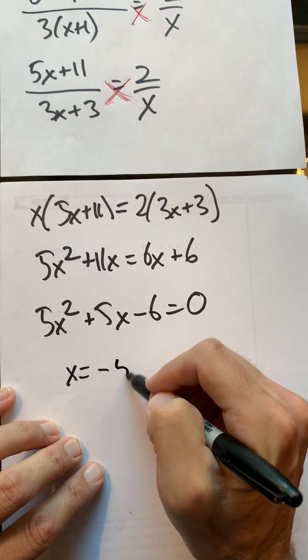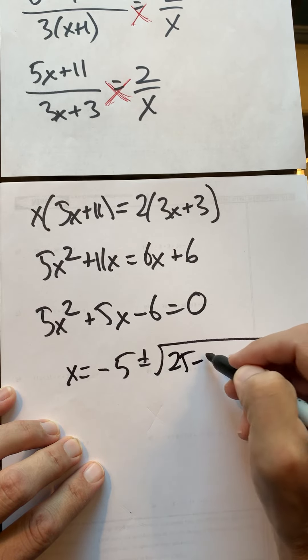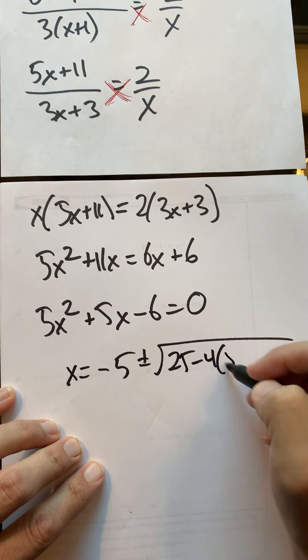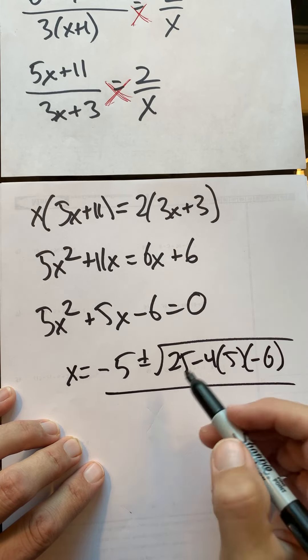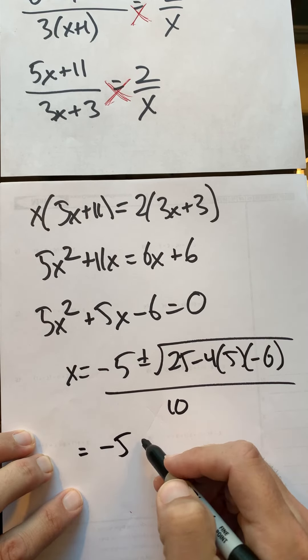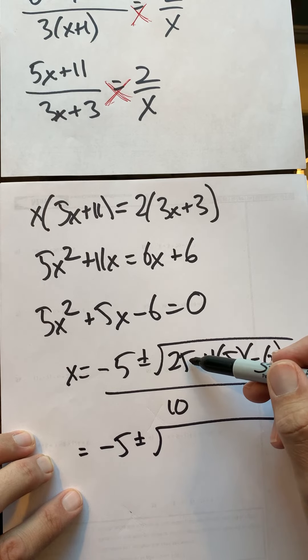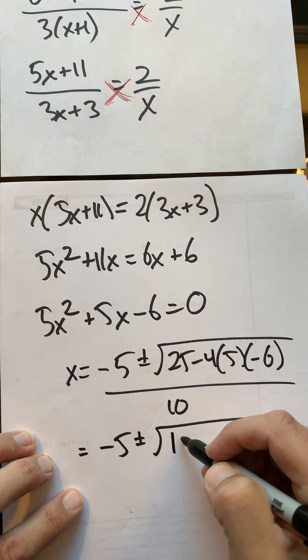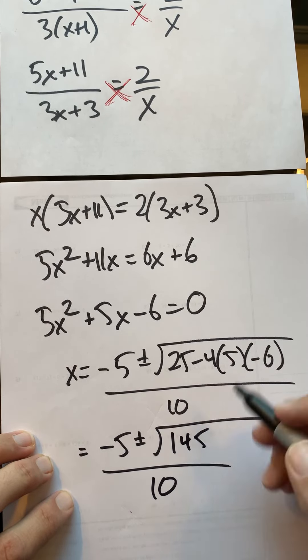I would have x = -b, so it's -5 ± √(b² - 4ac), so √(25 - 4ac) all over 2a, which is 10. Look at this: it's going to be positive, so 4 times 5 is 20, 20 times 6 is 120, 120 + 25 is 145, over 10.